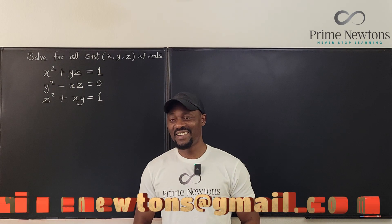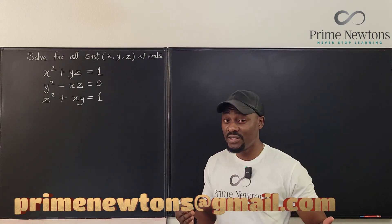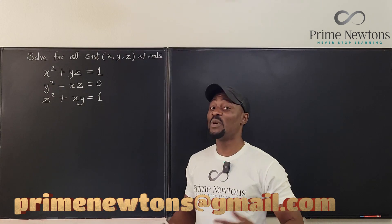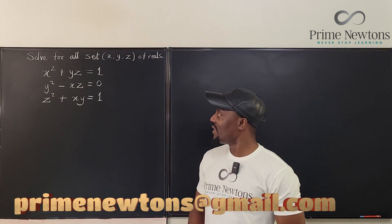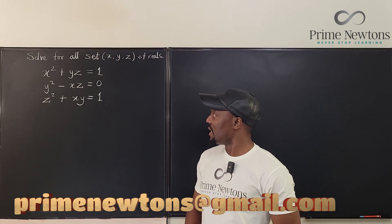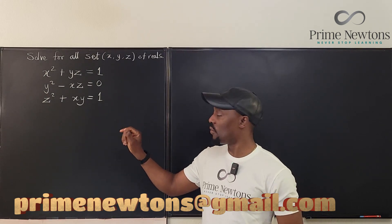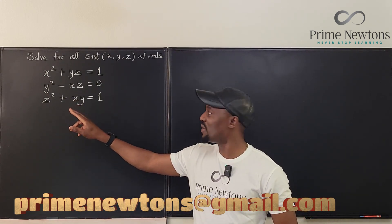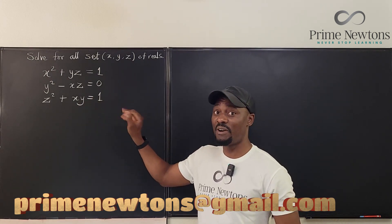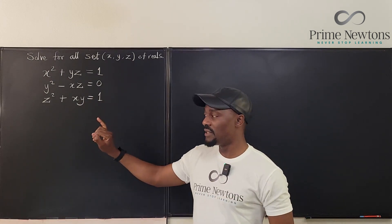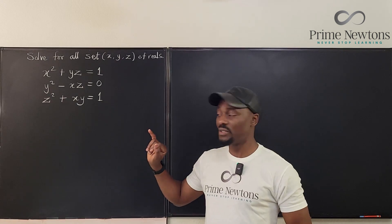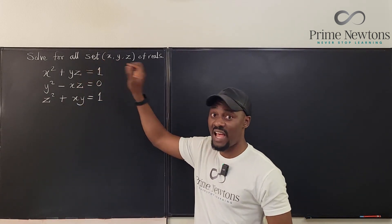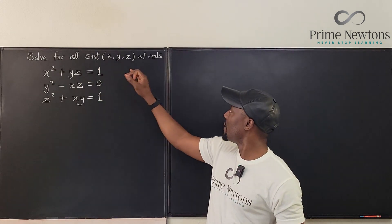Welcome to another video. We have another system of equations here, and it's different from what we've done before, but we're still going to solve it. So we have x squared plus yz equals 1, y squared minus xz equals 0, and z squared plus xy equals 1. And we're supposed to find all sets x, y, z of real numbers.